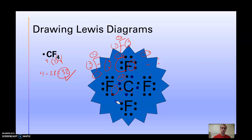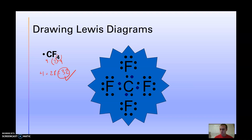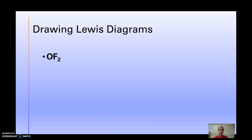This next one — OF2 — try it on your own. Total up the valence electrons, fill in the dots, put them around the central atom, then fill in eight and count. Oxygen is going to be your central atom. Pause the video and try it.